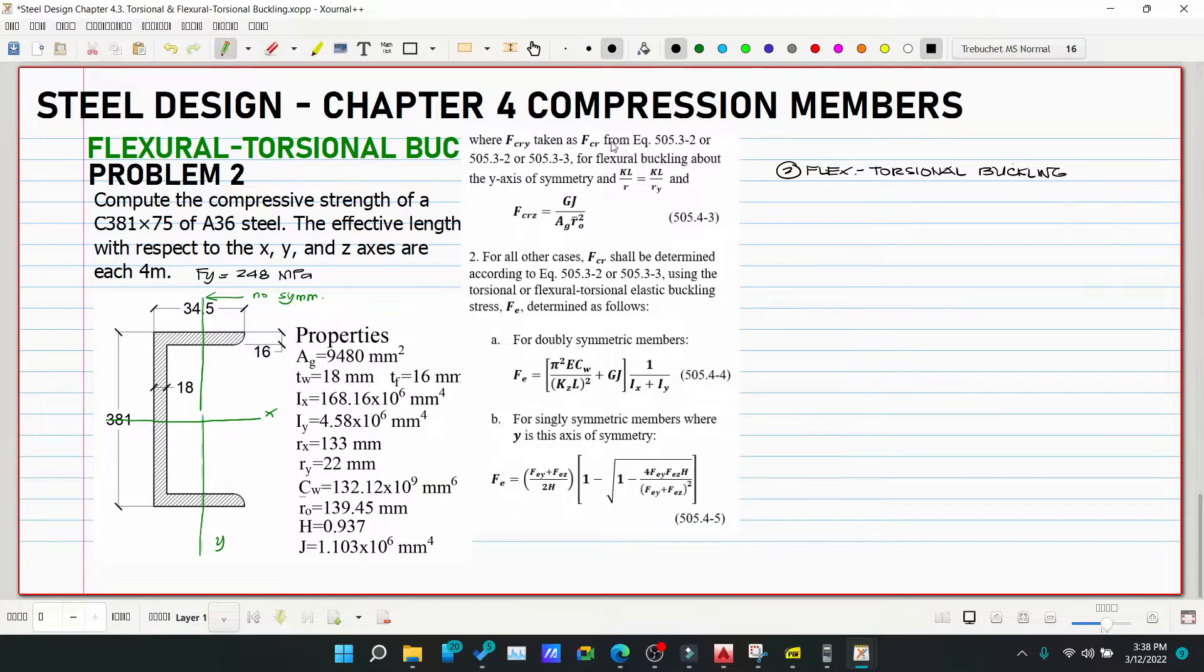Now our equation Pn is equivalent to Fcr × Ag, where our Fcr comes from the flexural buckling equation, but the Fe we use there comes from letter B. Fe is equivalent to (Fey + Fez)/(2h) × [1 - √(1 - 4FeyFez·h/(Fey+Fez)²)].